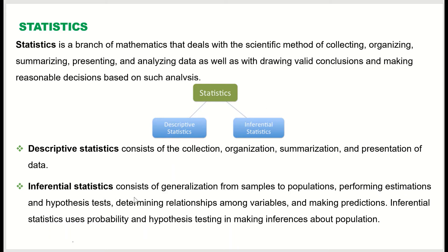Inferential statistics consists of generalization from sample to population. What we do is take a sample, study the sample, and try to predict about the population using that sample. Performing estimations and hypothesis tests are part of inferential statistics, as well as determining the relationship among variables and making predictions.